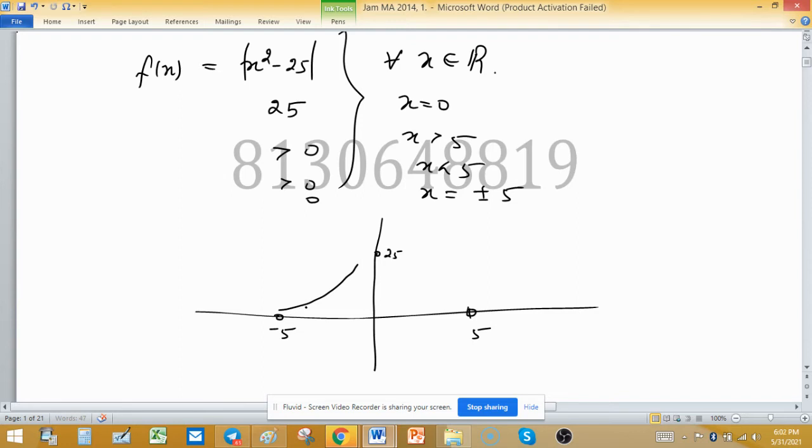Because when we know only about values of function is positive, so there is no idea about function is concave increasing or downward. So you can join either this or this but I am joining like this.